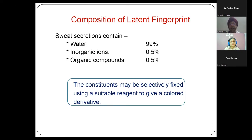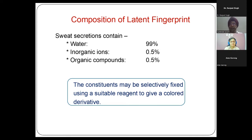Sweat contains 99% water, half a percent inorganic ions, and the remaining half percent are organic molecules. What we do is select any one component of sweat and, by some physical or chemical means, transform it into a color derivative so that whatever is hidden becomes visible — the fingerprint has been detected. Which sweat constituent we choose depends upon the nature and color of the surface on which we want to develop the fingerprint.